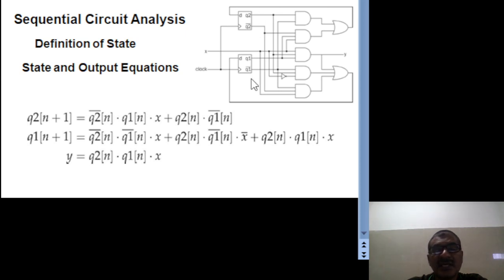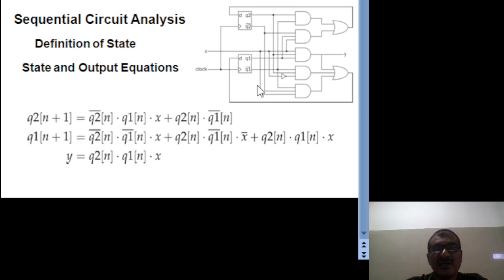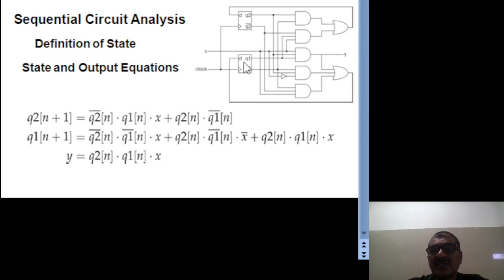So from this circuit diagram, the output of each flip-flop represents the state. We have two flip-flops: one with output Q1 and another with output Q2. The current outputs of Q1 and Q2 are represented as Q1(n) and Q2(n), meaning the present state. This circuit gives a two-bit state representation and one output that is y.